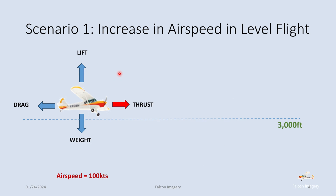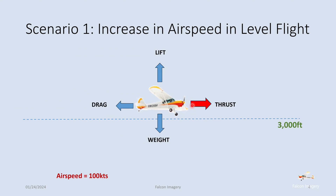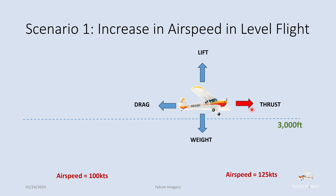Look at a scenario where if we increase the aircraft's airspeed in level flight, look what happens to the thrust vector compared to the drag vector. As we move forward, you see the thrust vector gets larger, and then it shrinks as it reaches its new velocity of 125 knots. We didn't have any climb or descent, so there's no change in the lift or weight force vectors. We just had an increase of thrust relative to drag — thus it was out of equilibrium and the aircraft accelerated. Once we got to a new airspeed of 125 knots, thrust was reduced back to the drag level, and we were now in equilibrium with a net sum force of zero between thrust and drag, flying level at 125 knots.